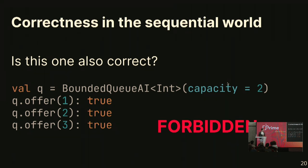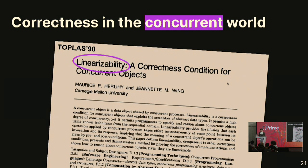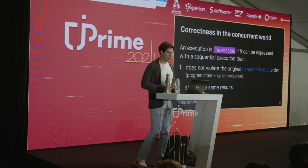But how do we understand whether a concurrent execution is correct or not? With concurrency, you have multiple threads, and these threads may interleave in many different ways. We need to decide whether something is correct or incorrect. When we say concurrent algorithms are thread-safe, atomic, or correct, we usually mean that they are linearizable — that's the default correctness condition for concurrent algorithms, and now we'll dive into this condition.